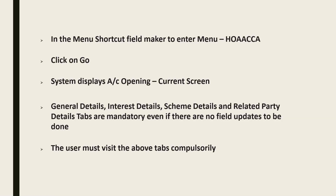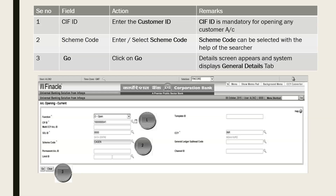In General Details we'll be selecting the mode of operations and dispatch of statement of account. In Interest Details we specify where interest has to be credited and debited, and which account, depending on the scheme. These tabs are compulsorily to be visited. I would advise all of you to maintain a separate diary — a Finacle diary — and note down these things to make your job very easy.